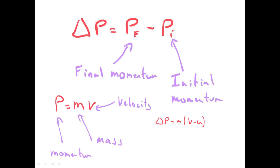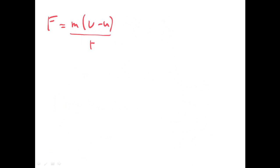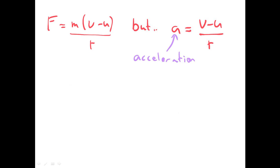So we can think of our change of momentum as being the mass times the change in velocity. And the mass in most cases doesn't change, so we're just really looking at the velocity changing. Now if we substitute this in, the change in momentum is the mass times the change in velocity. Well, acceleration is the rate of change of velocity, so we can substitute this in, and we get F equals ma — Newton's second law.